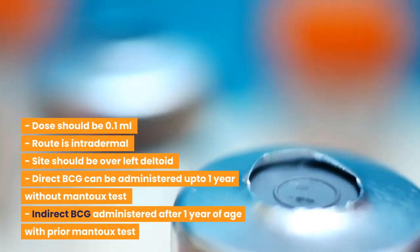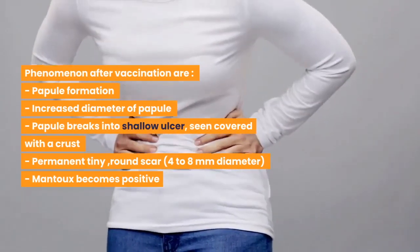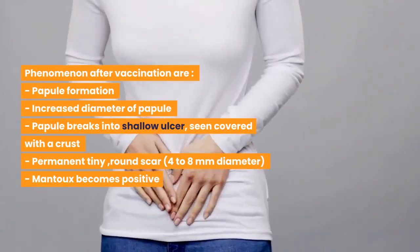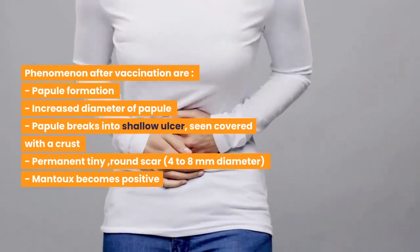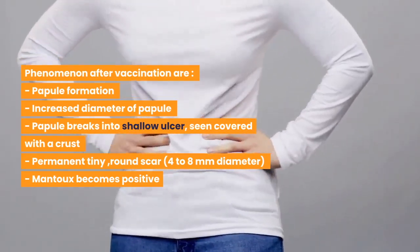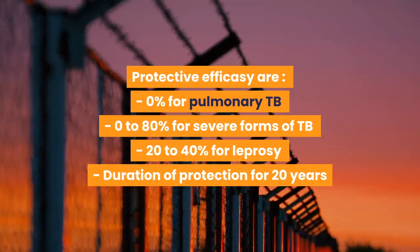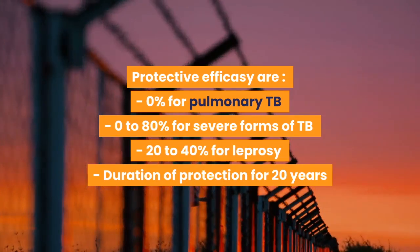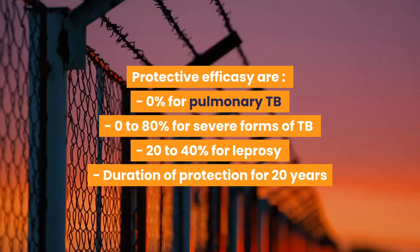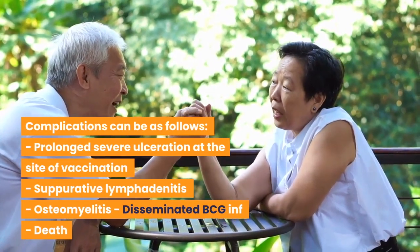Direct BCG can be administered up to one year without a Mantoux test; indirect BCG is administered after one year of age with a prior Mantoux test. Phenomena after vaccination include papule formation, increased diameter of papule, papule breaks into a shallow ulcer covered with a crust, and a permanent tiny round scar of 4–8 mm diameter; Mantoux becomes positive. Protective efficacy: 0% for pulmonary TB, 0–80% for severe forms of TB, 20–40% for leprosy. Duration of protection is 20 years.